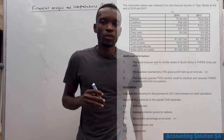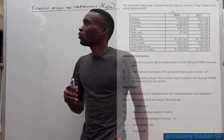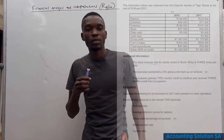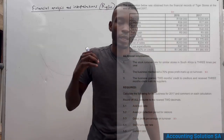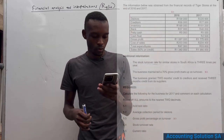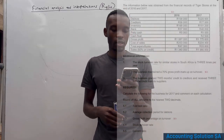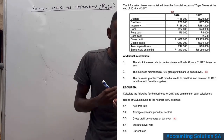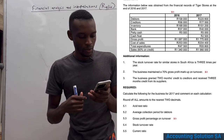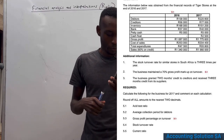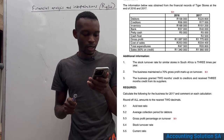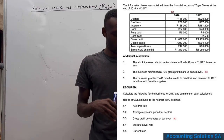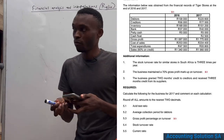In this video we are going to do financial analysis and interpretation, also called ratio analysis. We have been given information and a required section, so let's start with question 5.1.